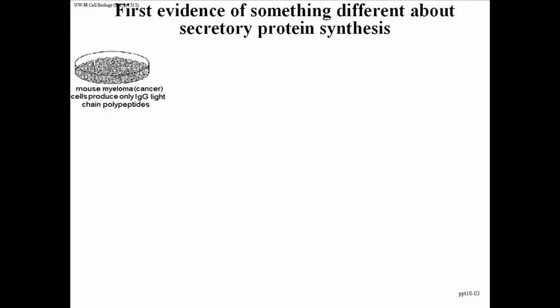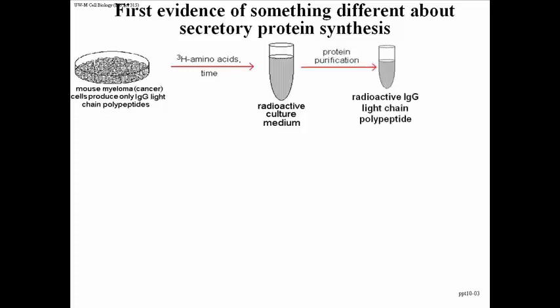This IgG light chain was produced by cells in culture and secreted into the medium. If you grew these cells, after a period of time you could suck up some of the medium and look at the IgG light chain, which was the predominant secretory product of this cell. Adding radioactive amino acids to the culture would incorporate them into radioactive proteins. Spinning the cells down and discarding them left a radioactive medium containing mostly radioactive IgG light chain, which with a little protein purification yielded nothing but radioactive IgG light chain polypeptides.